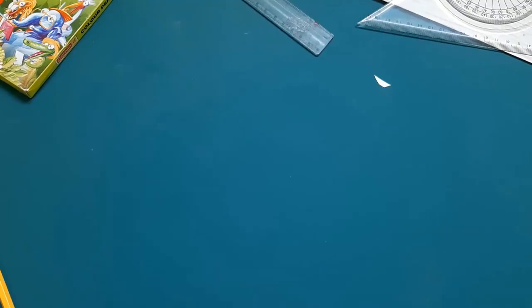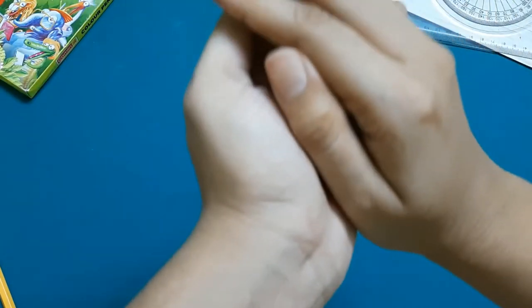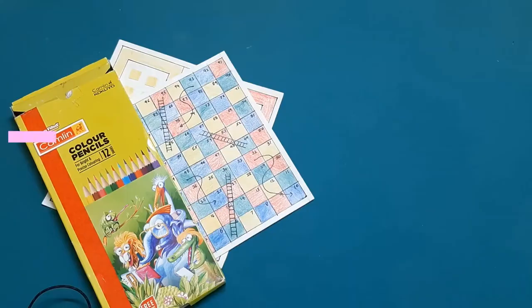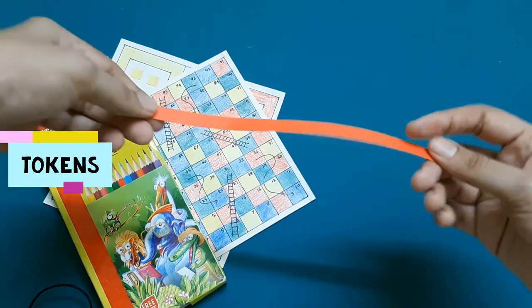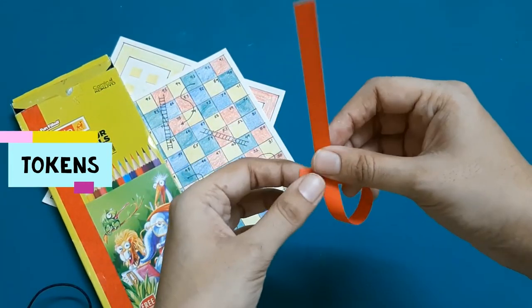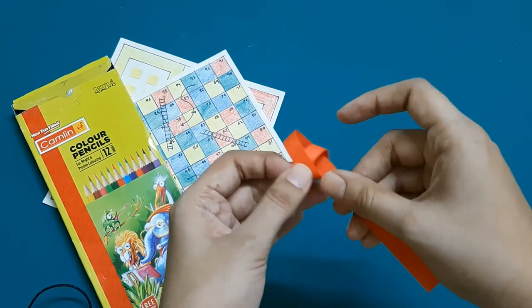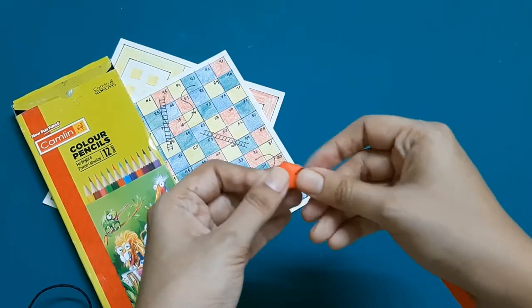Next, I have created 2 such dice because you would need 2 to play the games. Next, I am creating the tokens. For that, I am using a 2 cm wide strip, and fold it into a knot like this.